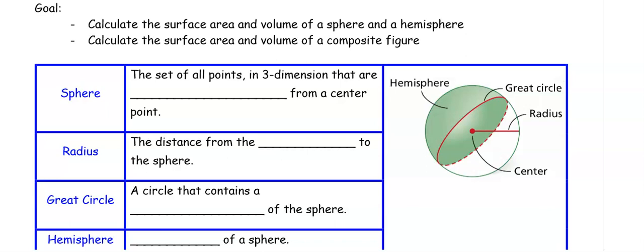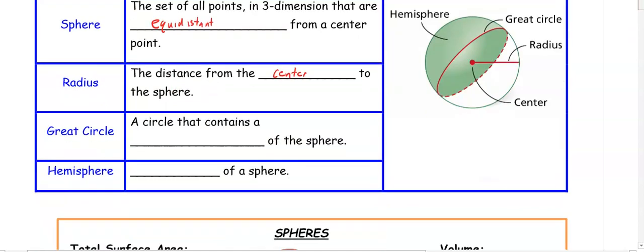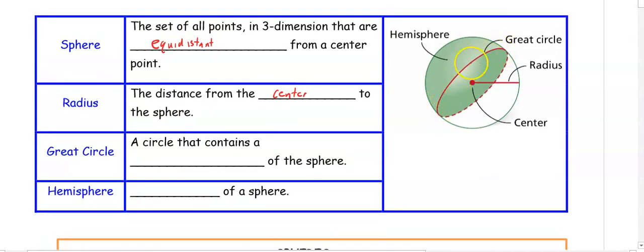First we need some vocab so we know what these shapes are. A sphere is the set of all points in three dimensions that are equidistant away from the center point. The radius is the distance from the center to the sphere. The great circle, shown here as half solid and half dashed because we're looking through the three-dimensional figure, is the circle that contains the diameter of the sphere. And a hemisphere is half of a sphere — think about if you took an orange and cut it in half, you would be creating a hemisphere.